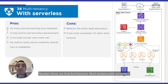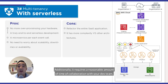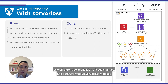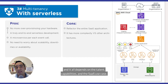Number three, our final architecture: multi-tenancy with serverless. The dream of any AWS architect is to create a multi-tenant SaaS architecture with a serverless approach. Additionally, it requires a reasonable amount of time collaborating with your dev team, extensive application of code changes, and a transformative serverless mindset. In a few years, it will build the ultimate solution and it will depend on the talent, capabilities, and the SaaS use case.